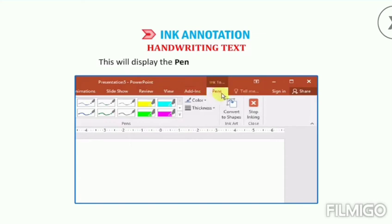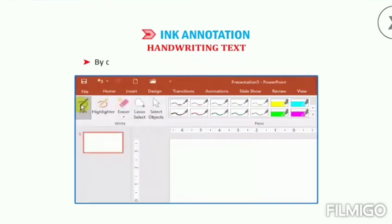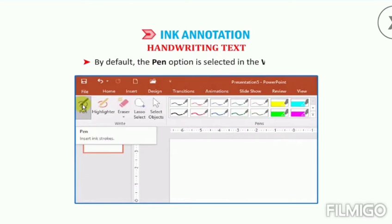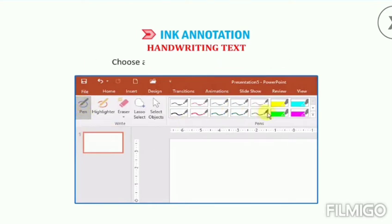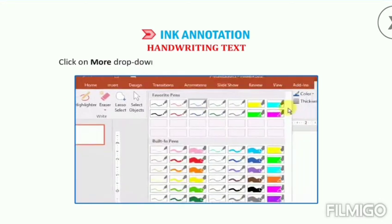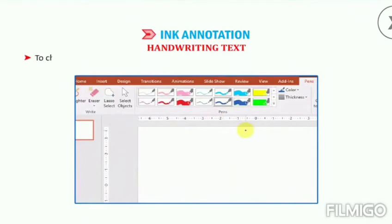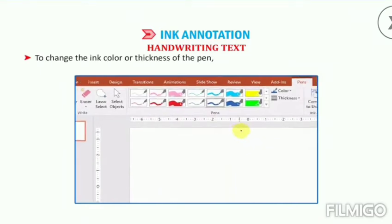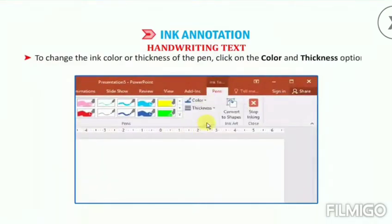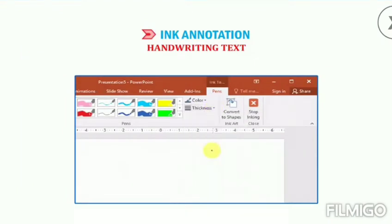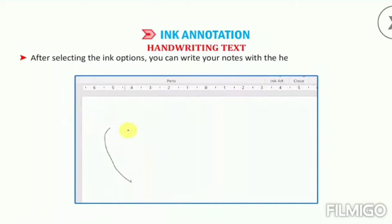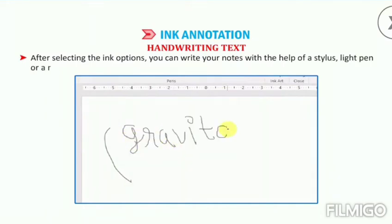This will display the Pens tab with various ink tools. By default, the Pen option is selected in the right group. Choose a colored pen from the Pens group. Click on the More drop-down arrow to view more options for your selection. To change the ink color or thickness of the pen, click on the Color and Thickness options under the Pens group. After selecting the ink options, you can write your notes with the help of a stylus, light pen, or a mouse.